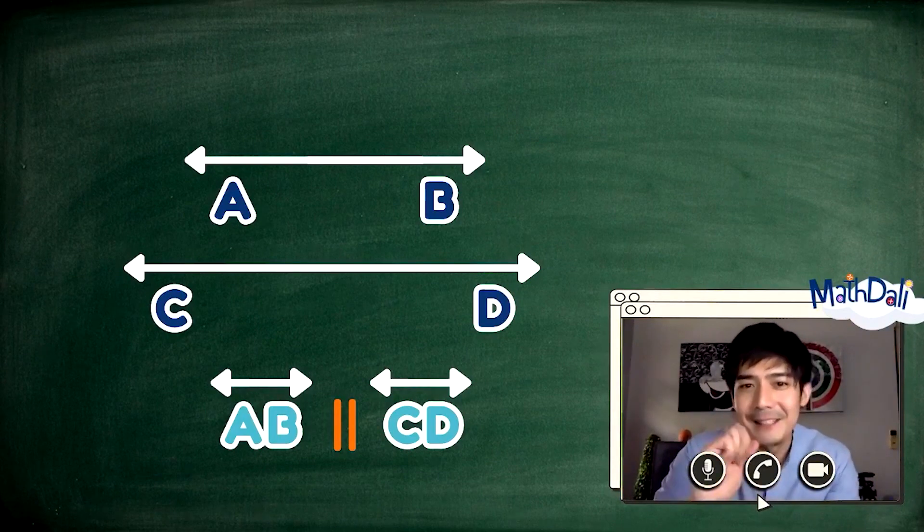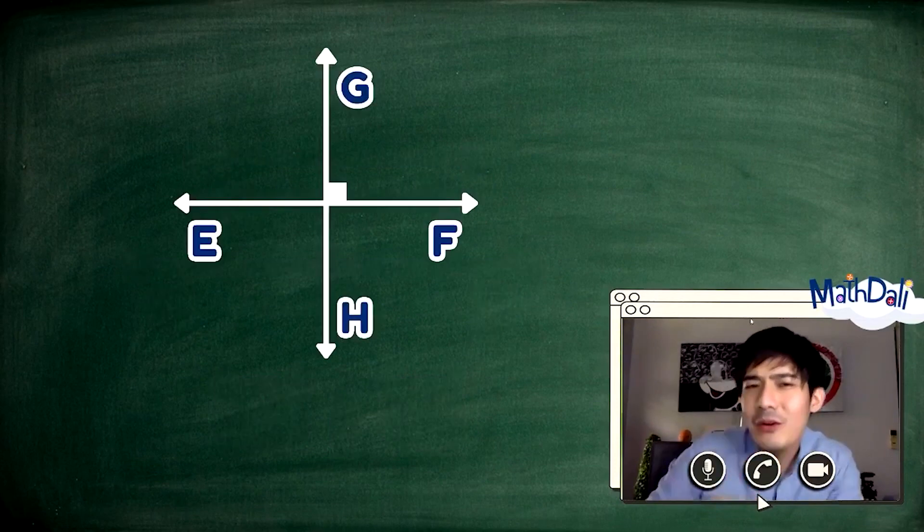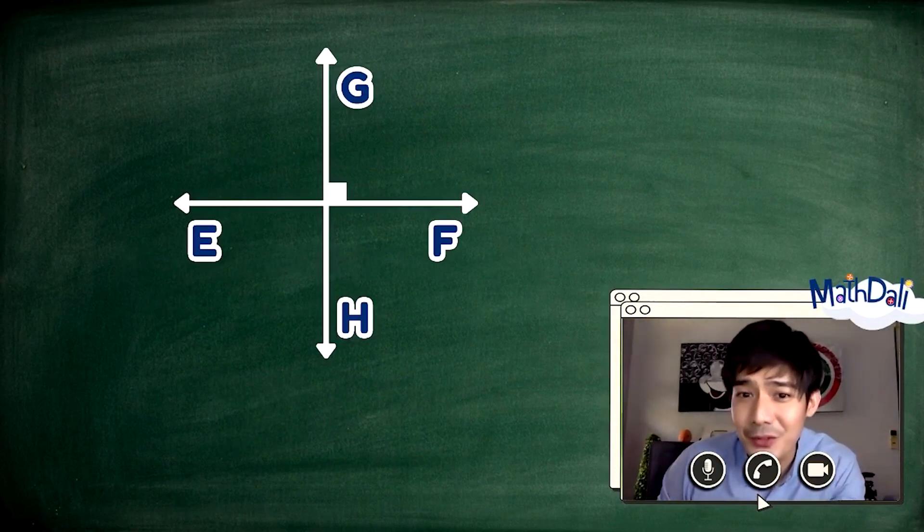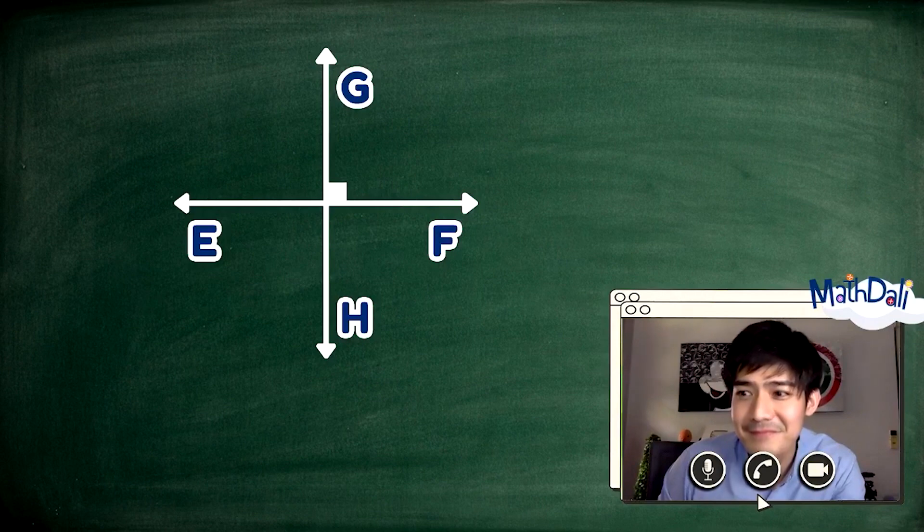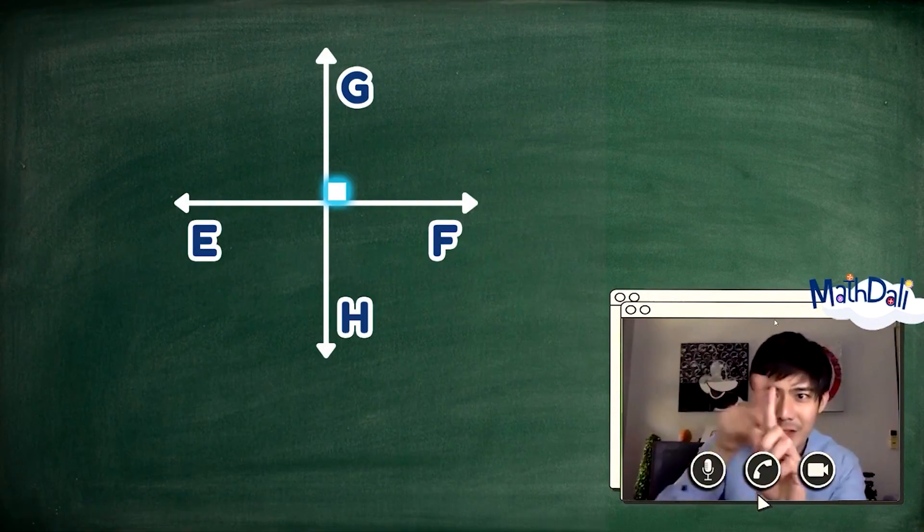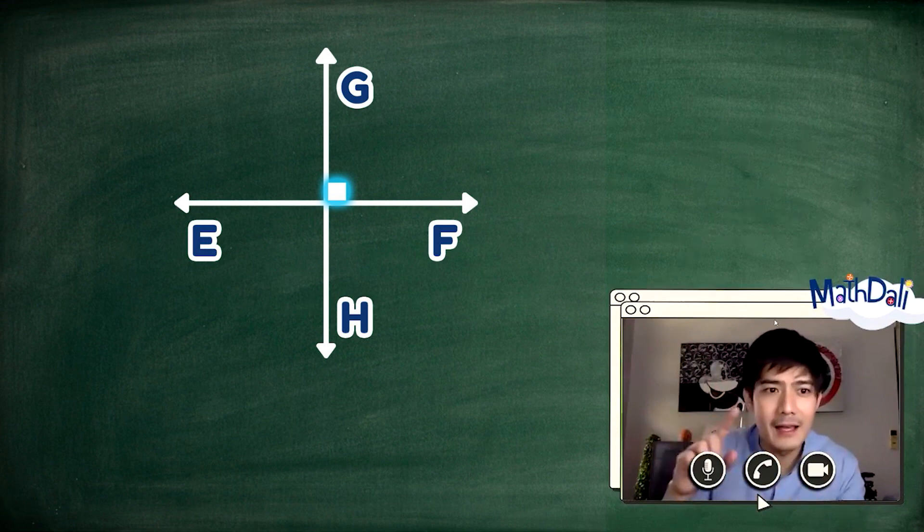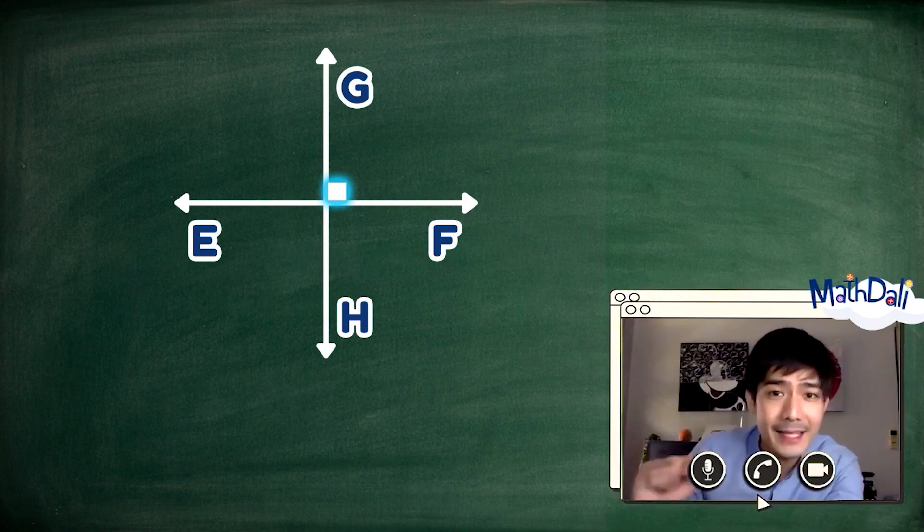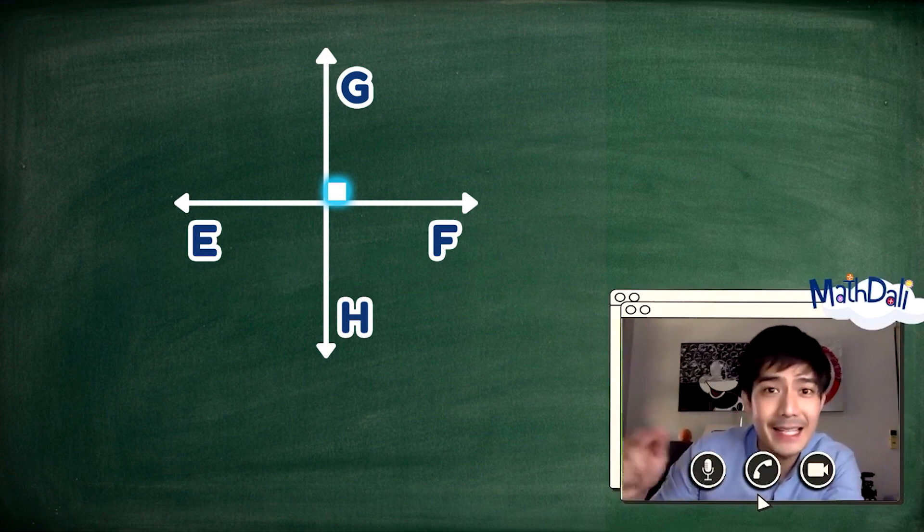Isa pa. Anong klaseng linya naman ang mga ito? Tama. Perpendicular lines. Bakit? Nakikita nyo yung parang box doon? Kailangan may ganoon. Na nagpapahiwatig na merong right angle. Pag may right angle, tawag doon, ay merong 90 degree angle yan. Perpendicular. Yan. Galing.